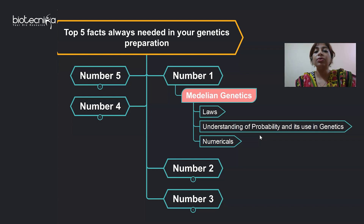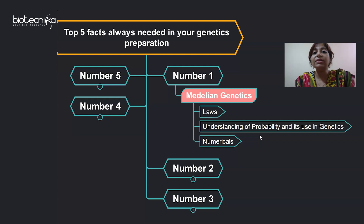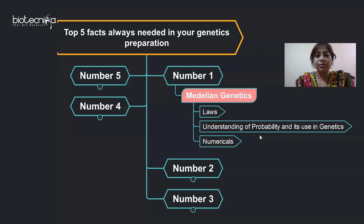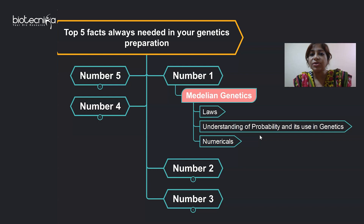There should be no confusion between the terms or formulas used, which brings us to numericals related to Mendelian genetics and the ratios obtained. When doing monohybrid or dihybrid crosses, always remember that the phenotypic ratio — for example, 3:1 in the F2 generation of a monohybrid cross — is a ratio, not an absolute number. You should also be well aware of basic terms: genotype, phenotype, F1, Punnett square, test cross, and reciprocal cross.